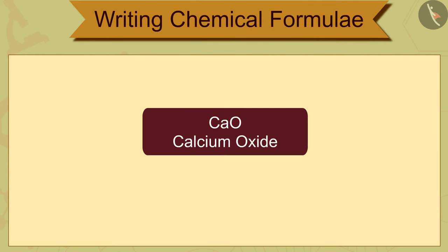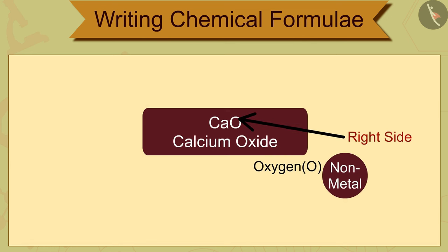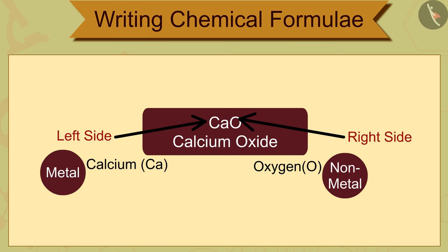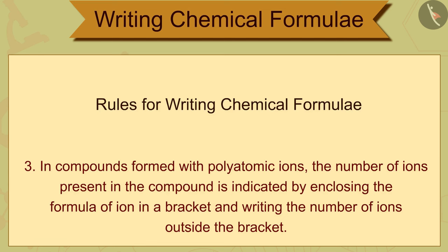For example, calcium oxide CaO, where oxygen is non-metal and is written on the right, whereas calcium is metal and is written on the left. Rule 3: In compounds formed with polyatomic ions, the number of ions present in the compound is indicated by enclosing the formula of ion in a bracket and writing the number of ions outside the bracket.